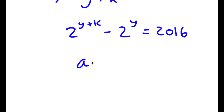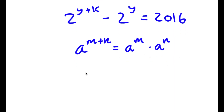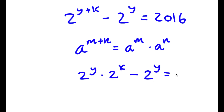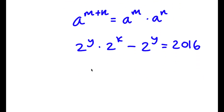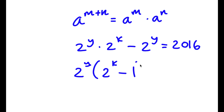Now, if I have something in the form a to the power of m plus n, this is equal to a to the power of m times a to the power of n. So 2 to the power of y plus k equals 2 to the power of y times 2 to the power of k. So I have 2 to the power of y times 2 to the power of k, minus 2 to the power of y, equal to 2,016. I can factor out 2 to the power of y, giving me 2 to the power of y times (2 to the power of k minus 1) is equal to 2,016.